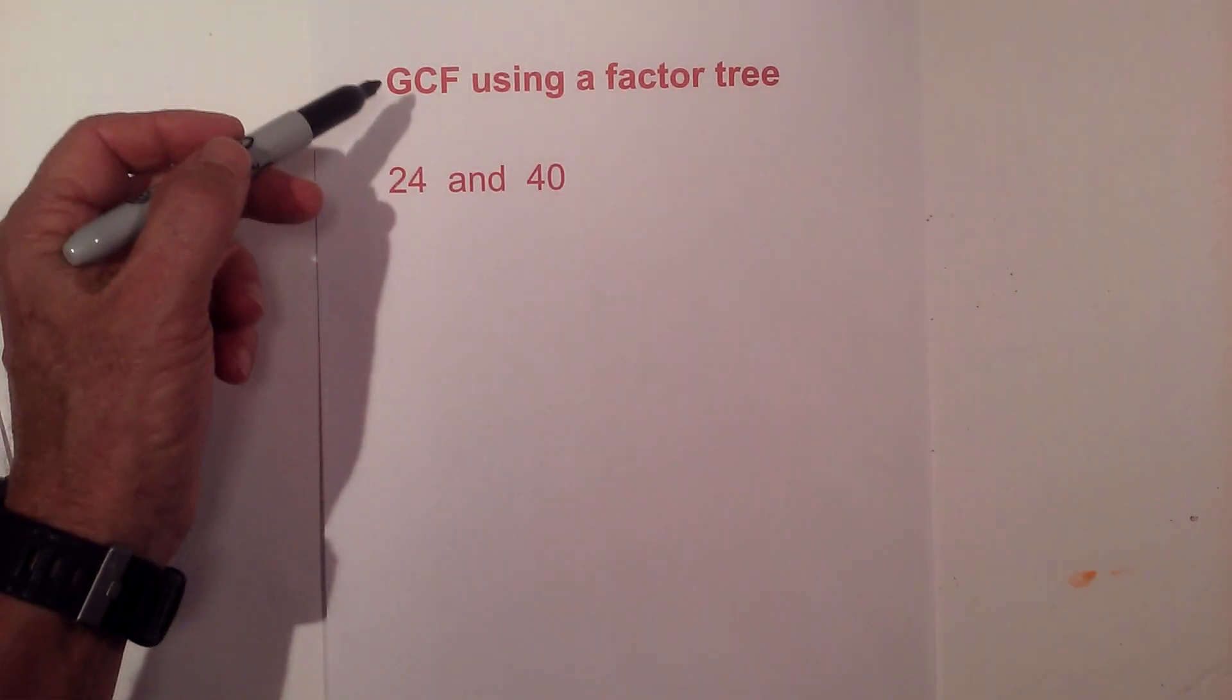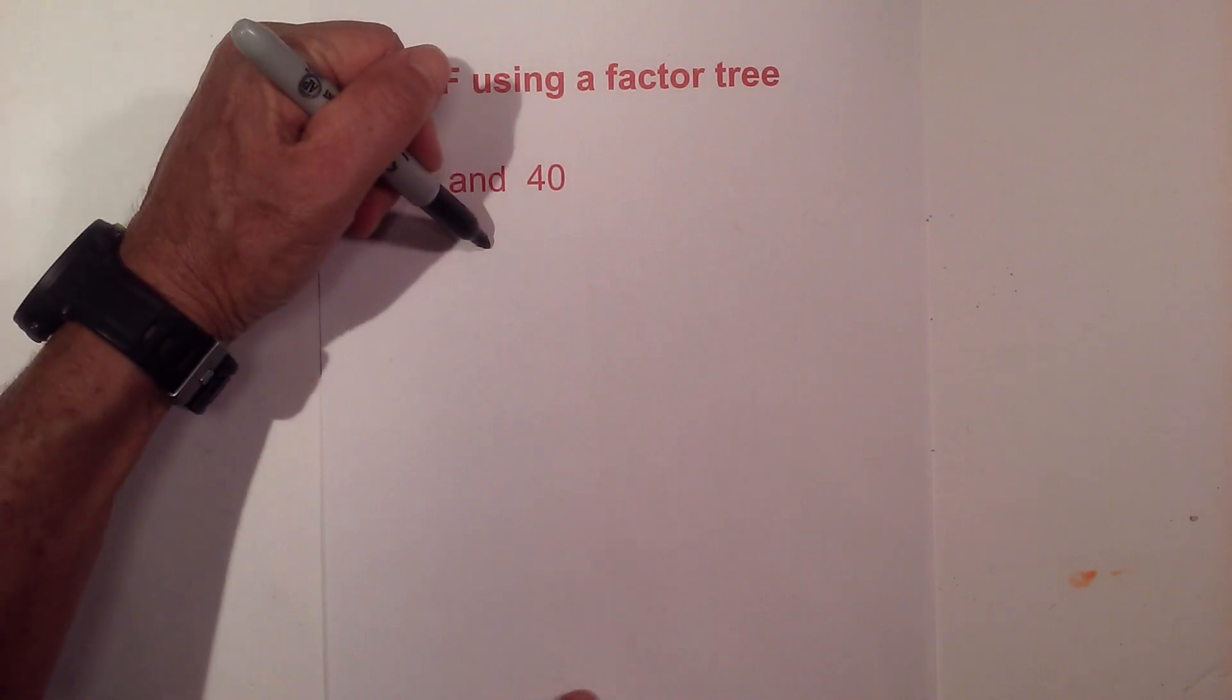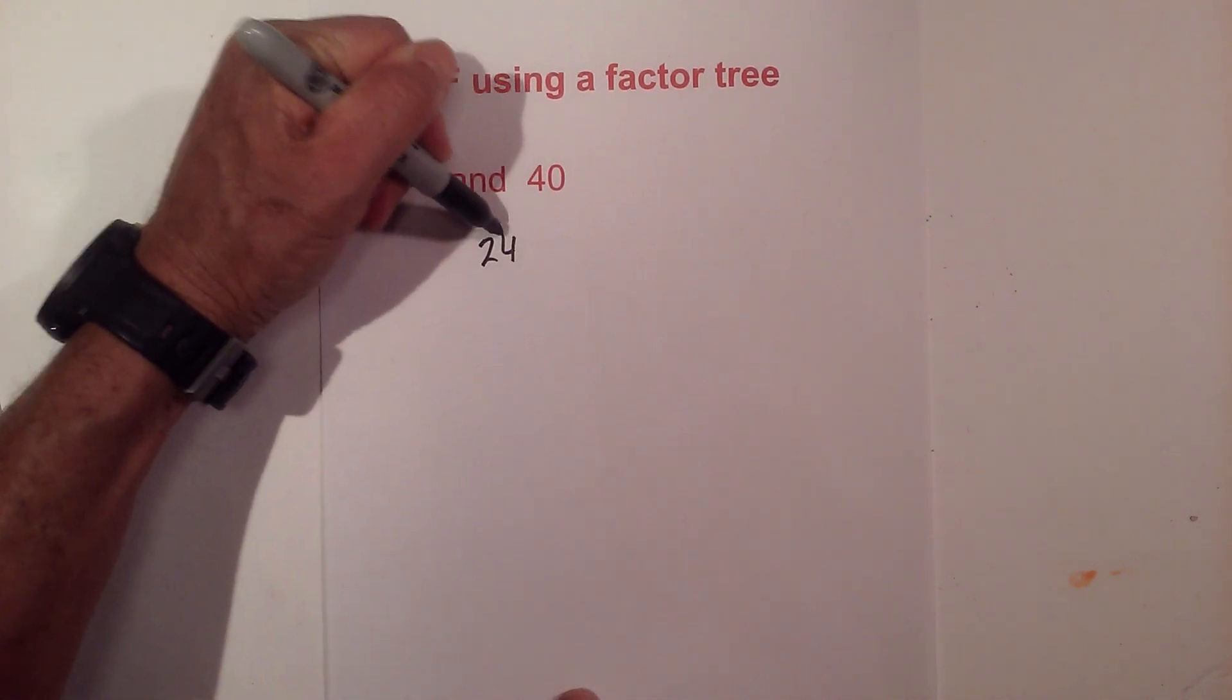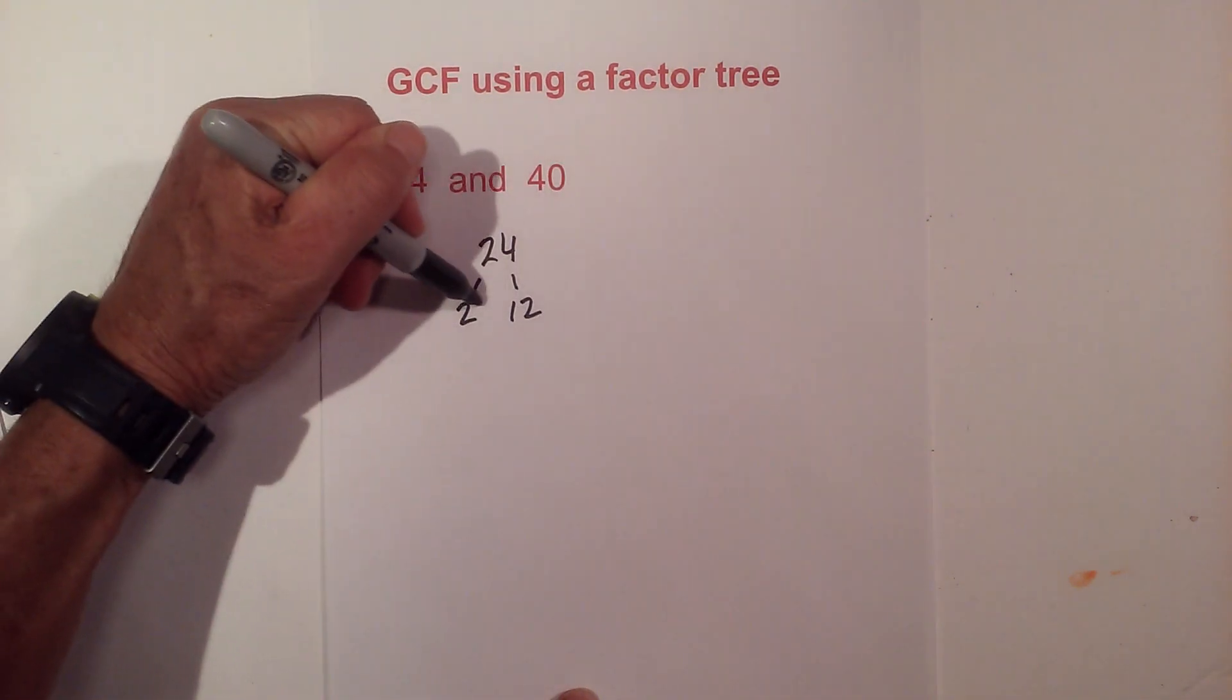In this video, let's find the greatest common factor of 24 and 40. I like to find the greatest common factor using a factor tree—I just think it's easy. We have 2 times 12 equals 24.